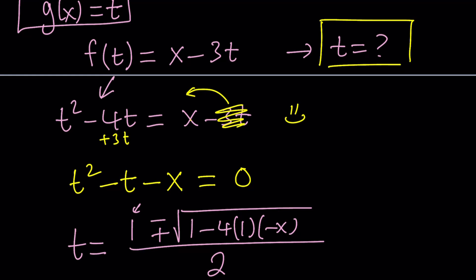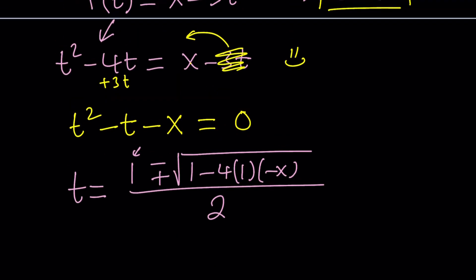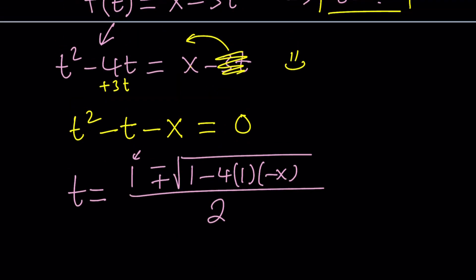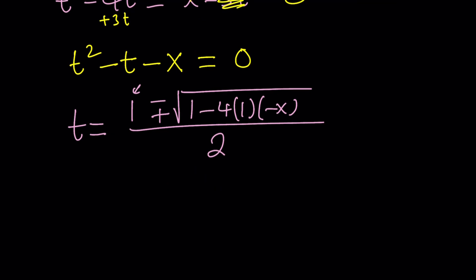That's it. We're done, right? Not yet. Let's go ahead and simplify this. And also, let's remember what t stands for. t stands for g of x. So, we're trying to solve for t, which is g of x. But let's go ahead and simplify it. From here, g of x becomes 1 plus minus the square root of 1 plus 4x all over 2.